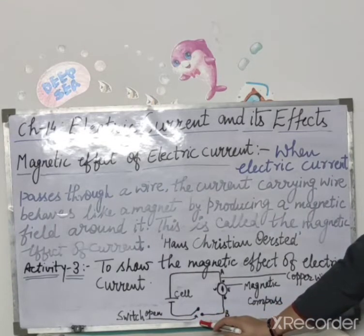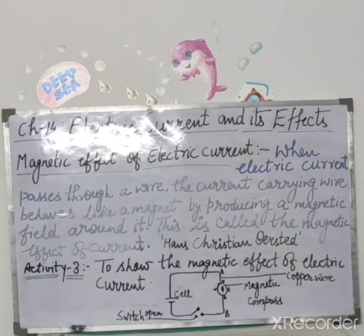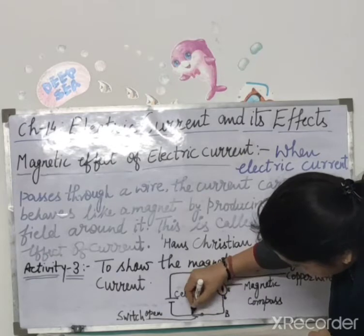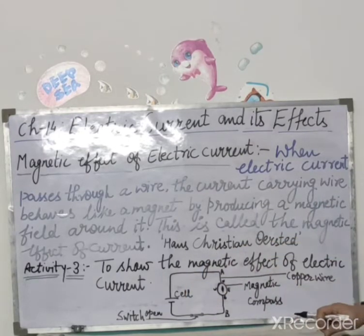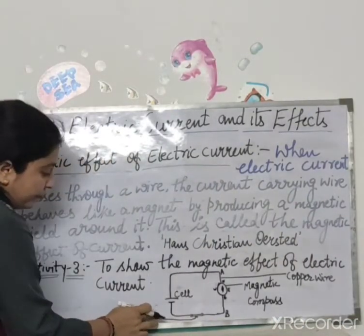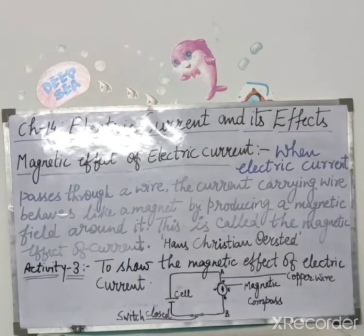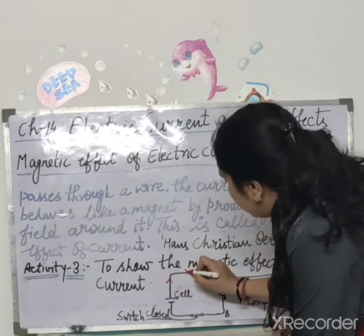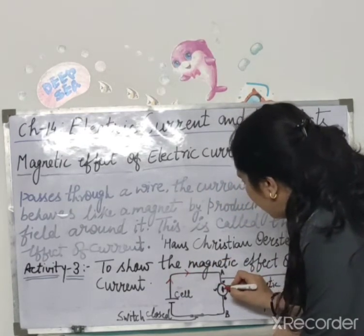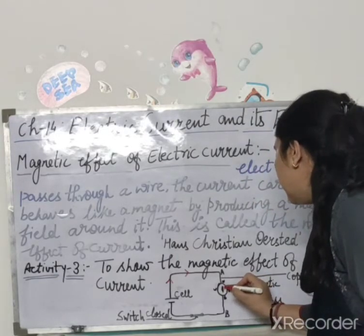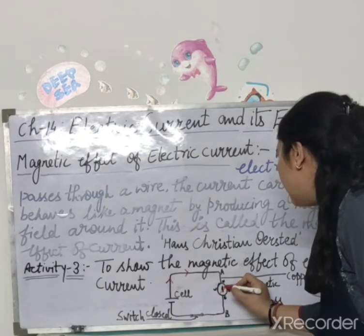When the current is passed through the wire, the needle gets deflected from its original north-south direction and points in another direction. Ab hum log switch ko close karte hain — dekh pa rahe hain aap log — to jab hum log switch ko close karte hain, current flow hoga, aur yi jo needle hai, woh deflect ho jaigi is tarike se, thodi si deflect ho jaigi.